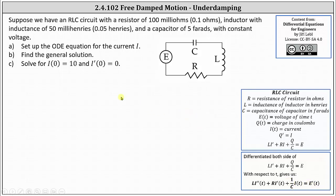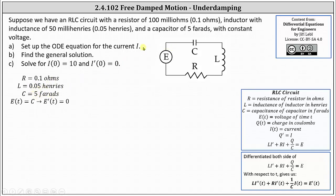Now let's list the given information. We know R equals 0.1 ohms, L equals 0.05 henries, and C equals 5 farads. Because we have constant voltage, E(t) equals some constant, indicating E'(t) equals zero.